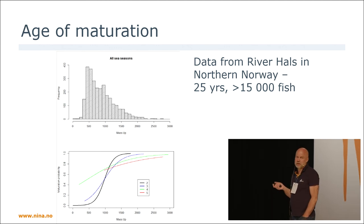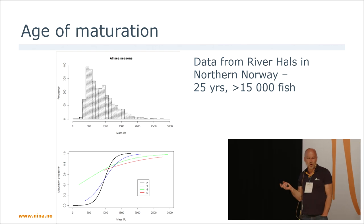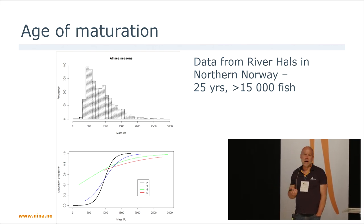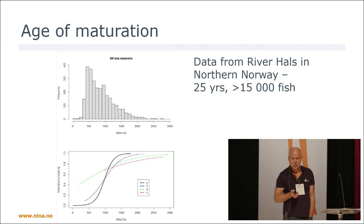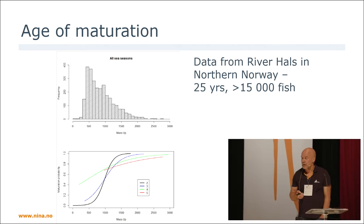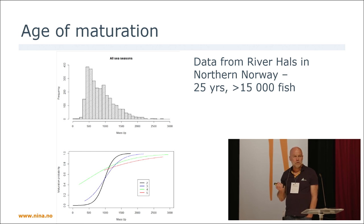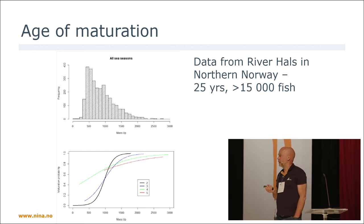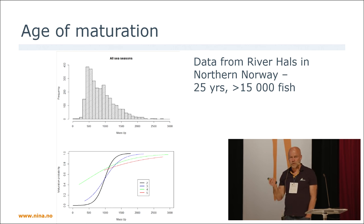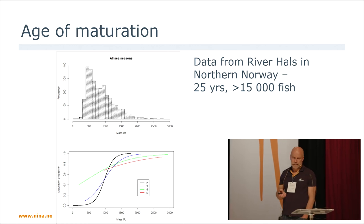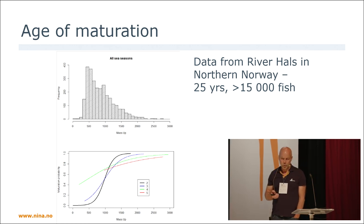A 30% reduction in growth, for example, can lead you fairly far down along this slope. The individual consequences for the sea trout will be a much lower expected lifetime fecundity, due to the possible delayed maturation and reduced fecundity, and also an expected lower lifetime.